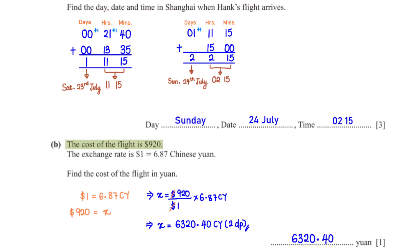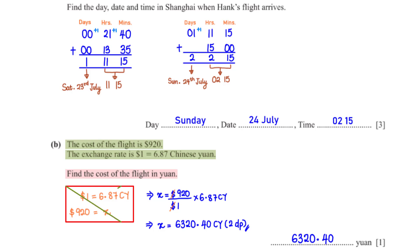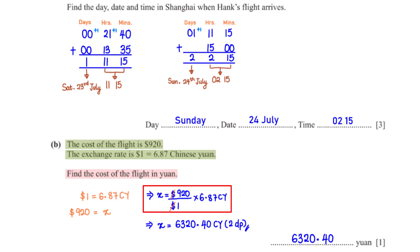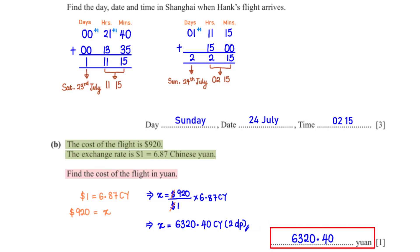The cost of the flight is $920. The exchange rate is $1 equals 6.87 Chinese Yuan. Find the cost of the flight in Yuan. First, we set up the conversion ratio. From here, when we cross-multiply and make x the subject, when we type this into the calculator, we get 6320.40 Yuan rounded to two decimal places.